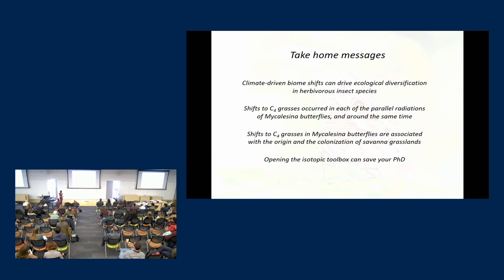So then take home messages. These climate driven biome shifts can drive ecological diversification in different herbivorous insect species, as we have seen. Shifts to C4 grasses occurred in each of these parallel radiations of Mycalesine butterflies around the same time. Shifts to C4 grasses are associated with the origin of savannah grasslands and the colonization thereof. And opening the isotopic toolbox can save your PhD, which is an important thing for me personally.